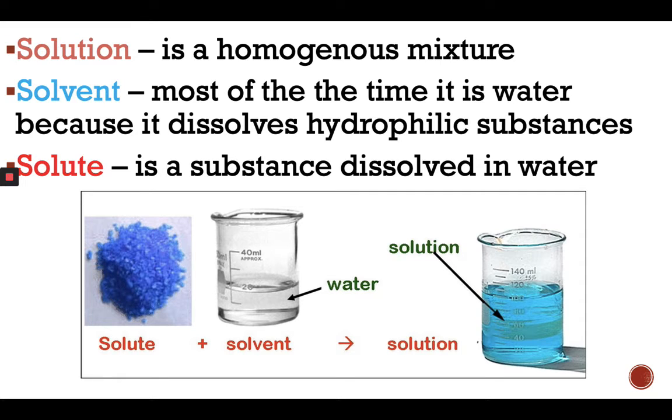Before going on to the next slide, you have to know what is solution, solvent, and solute. A solution is a homogeneous mixture. Solvent is most of the time water because it dissolves hydrophilic substances. Hydrophilic substances love water and are dissolved in water. Solute is a substance dissolved in water. So solute plus solvent equals solution. Remember these keywords.